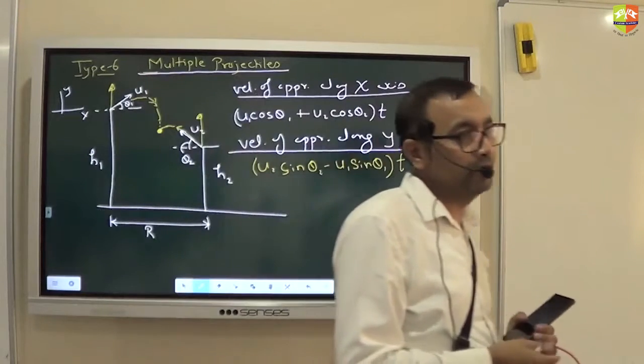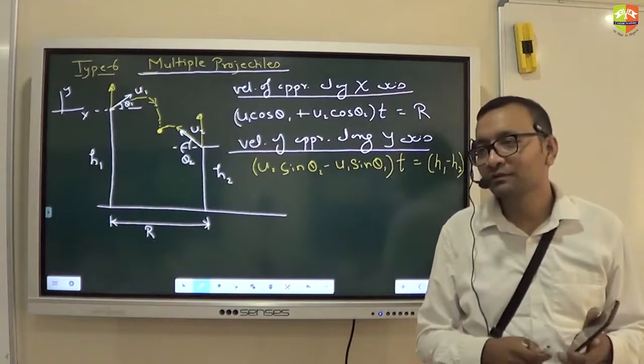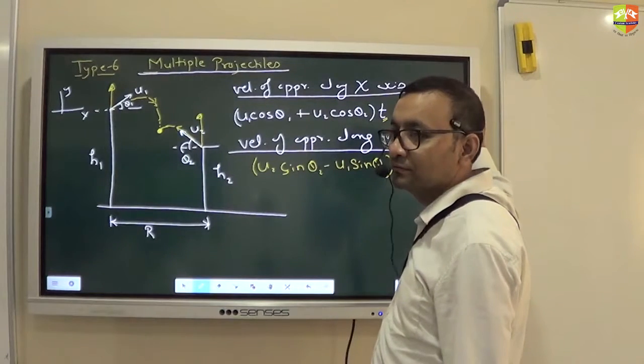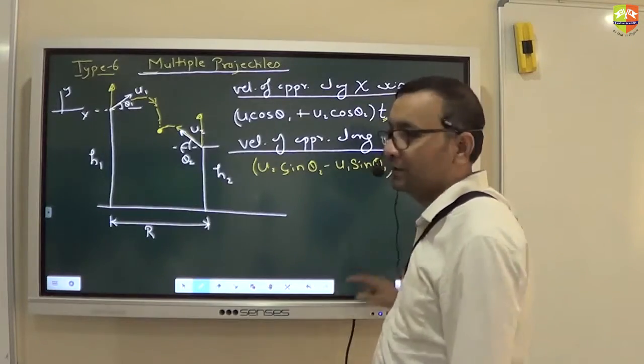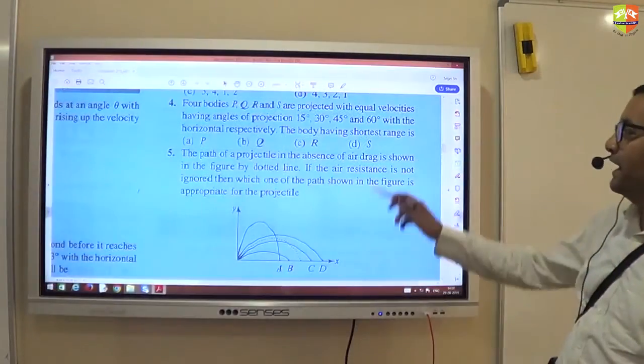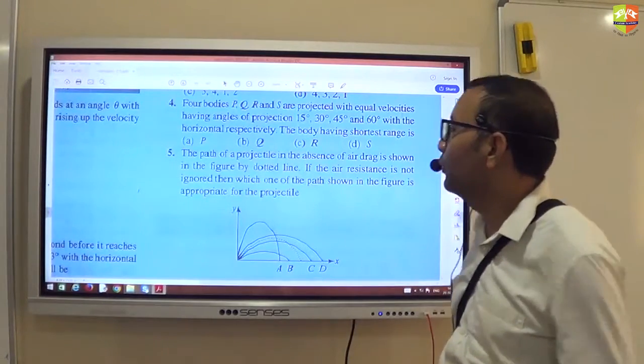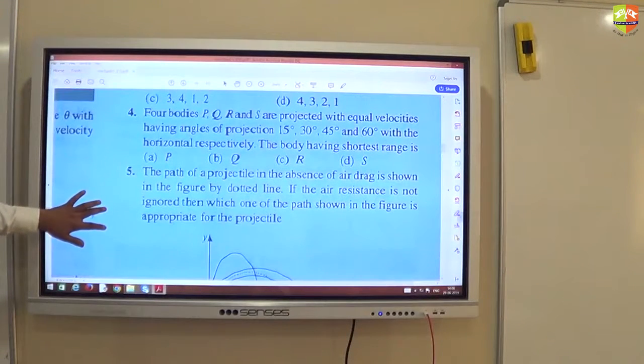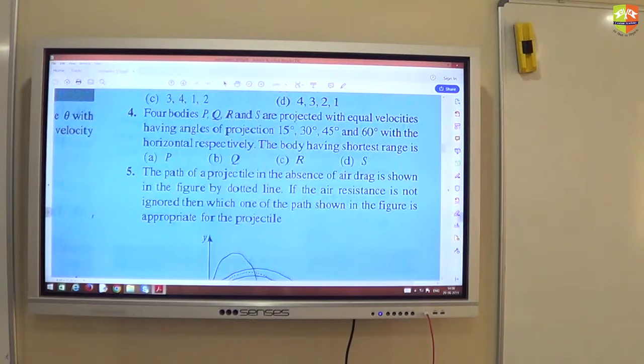Anyone has any doubt from the entire chapter? No doubt? I'm not finding k, I'm just writing the equation. This is the equation of the x-axis. Okay, you can see question number four and five. First solve question number four. You have two minutes to solve it. Right now it is 14:07, you have two minutes.